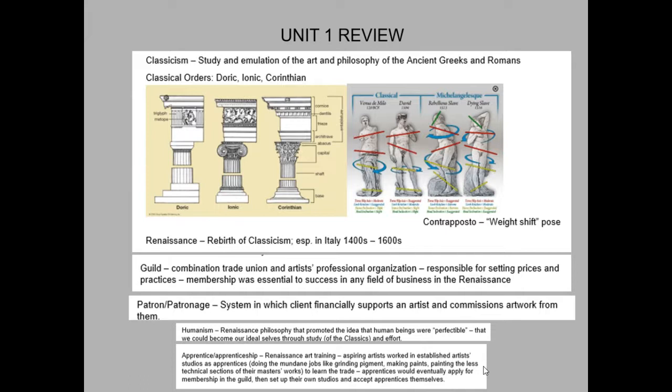Artists would seek guild membership, establish themselves as professionals, and take on apprentices. When an apprentice finished his term of service, he'd be eligible to try to become a guild member and set up his own workshop. That was the art training and economic system of the Renaissance.